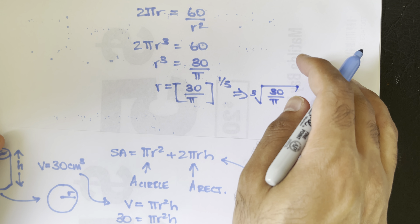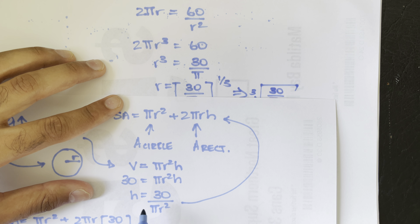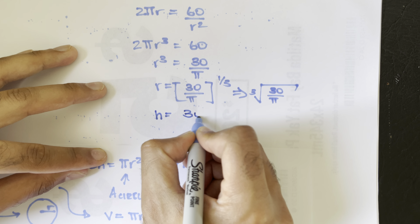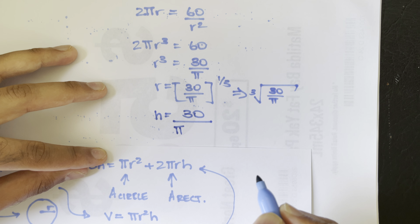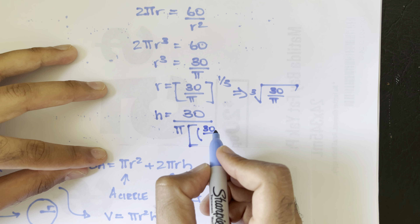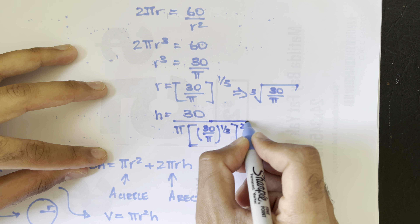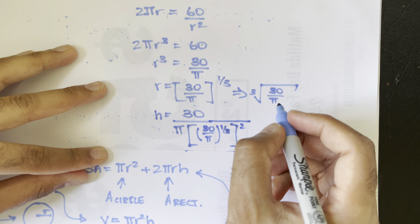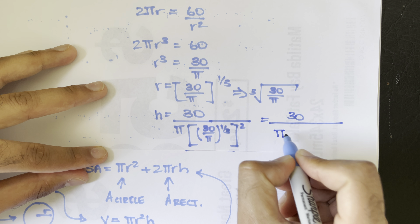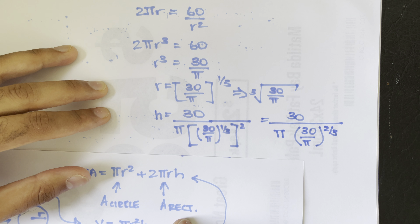Now we substitute r back into the height function h = 30/(πr²). Plugging in r = (30/π)^(1/3), we square that value as per the function, and we get h = 30 / (π · (30/π)^(2/3)).